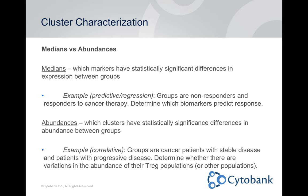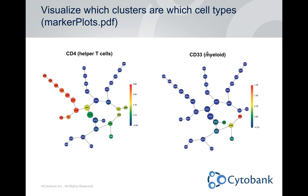Citrus has a few different modes. One choice is what you want to compare. Medians would apply to a functional marker — for instance, phospho signaling, which is what we're looking at in this data. You ask what changes in my channel between these two groups. Or you can look at abundances — what changes in the number of events in my nodes between two experiments. If you gain or lose a population, that would be looking for abundance differences. Regardless of which mode or association model you use, you'll get marker plots as part of the results.